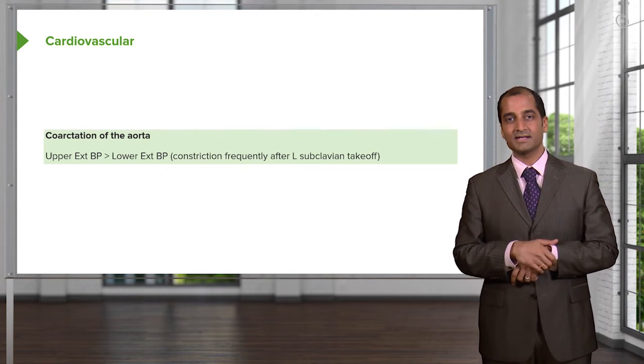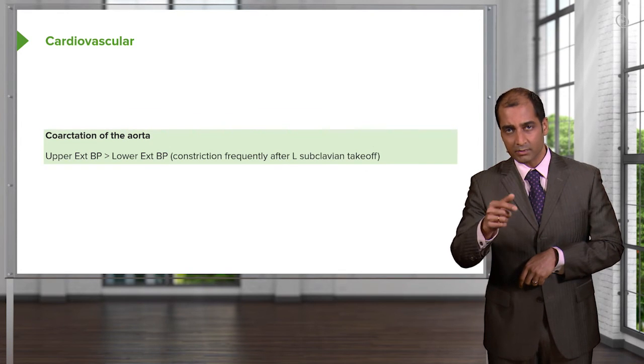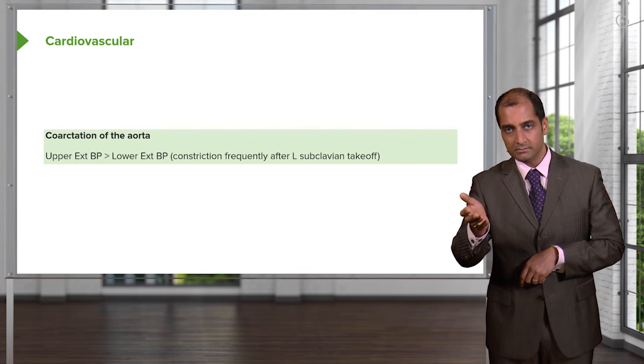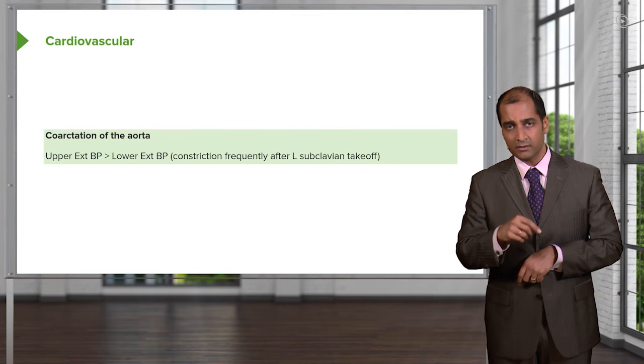And what about the blood pressure in the lower extremity? It's decreased. What do you think happens to perfusion of a kidney? Decrease. What kind of questions might they ask you on physio? They might ask you about decreased perfusion of the kidney and coarctation. True or false? True.